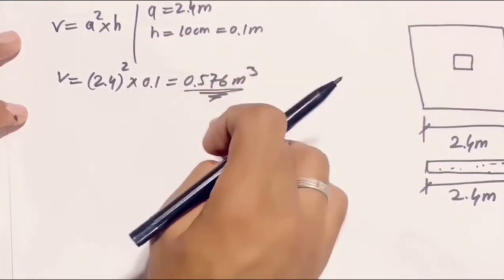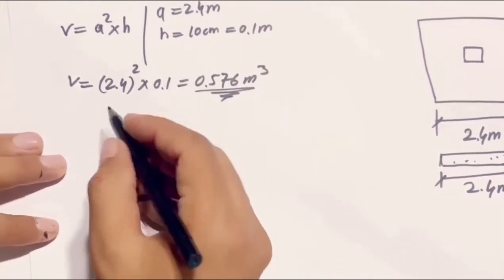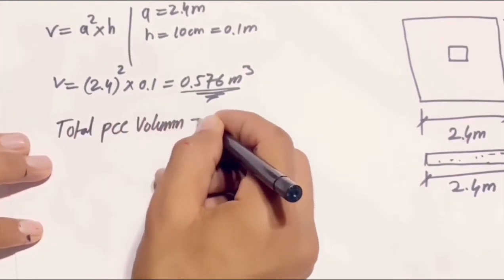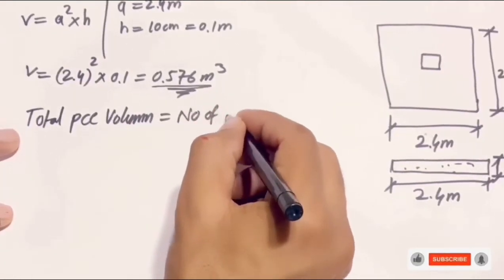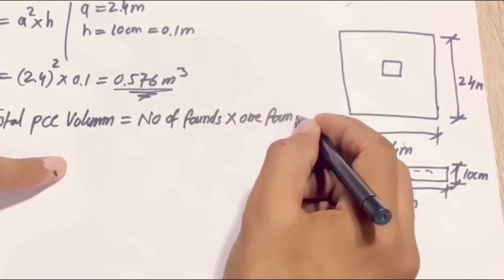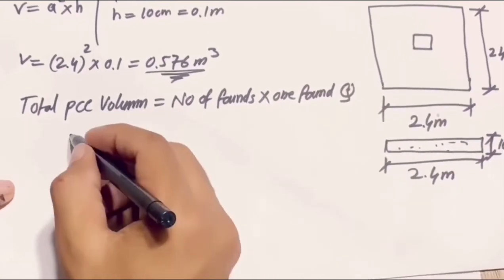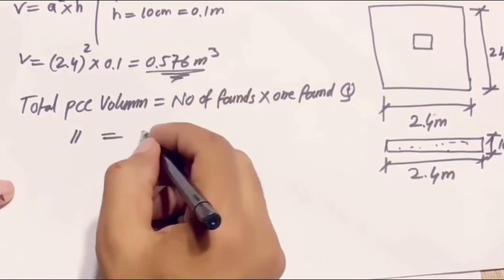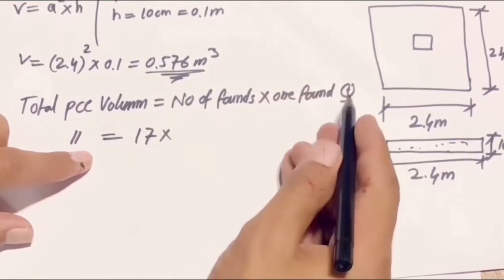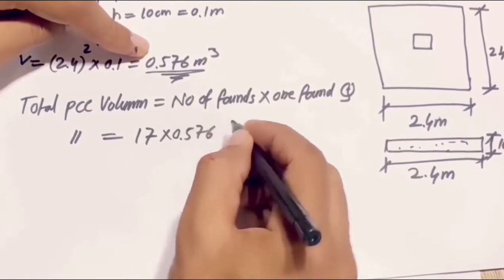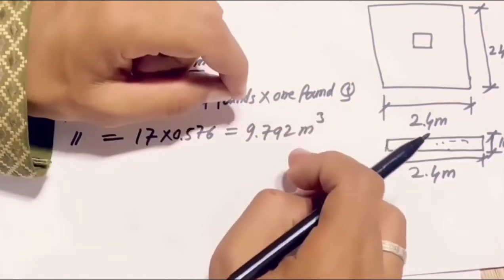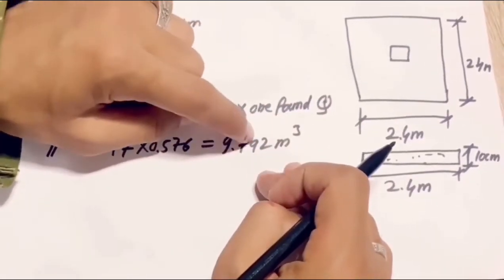We will multiply this volume by all foundations to get the total PCC quantity. Total PCC volume = number of foundations × one foundation quantity. We know from the drawing we have 17 foundations in our project, so: 17 × 0.576 cubic meters = 9.792 cubic meters. This is the total PCC for all foundations.